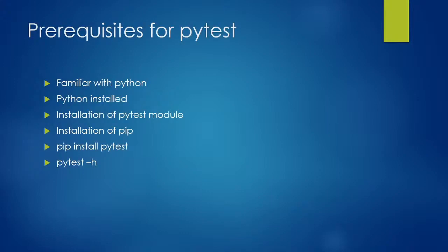Pip is a package management system used to install and manage packages written in Python. Packages can be found in different sources, with a dependency on the Python Package Index, which is PyPI. Once installed, you can verify it using: pytest -h, which gives you all the subcommands.